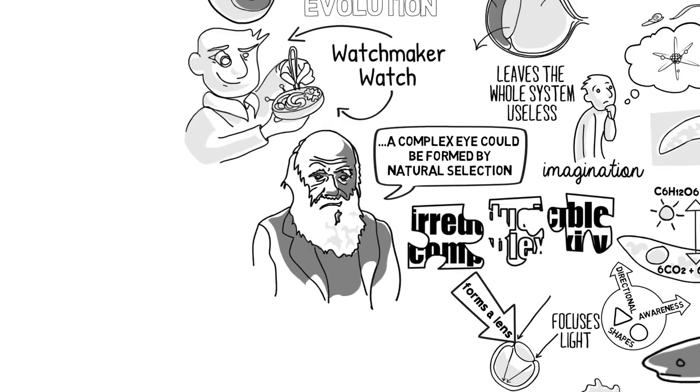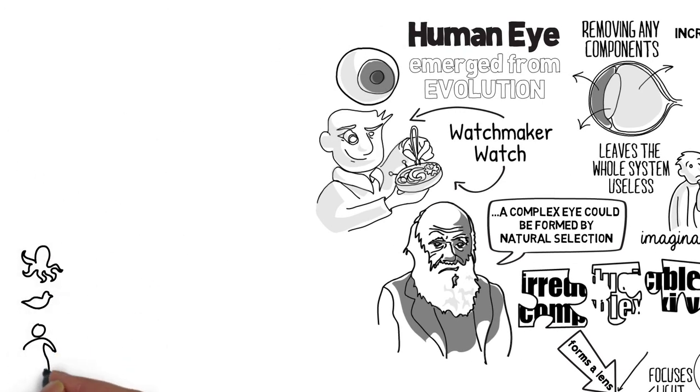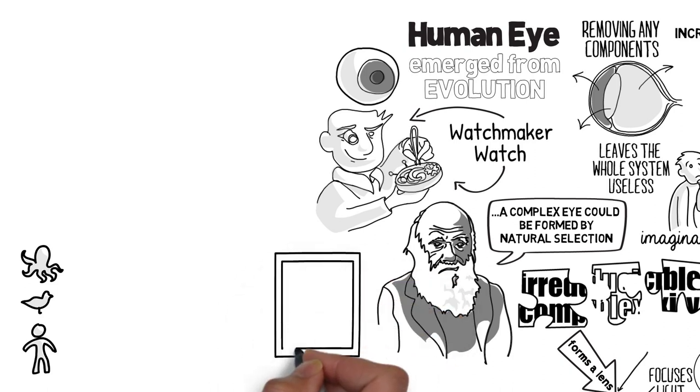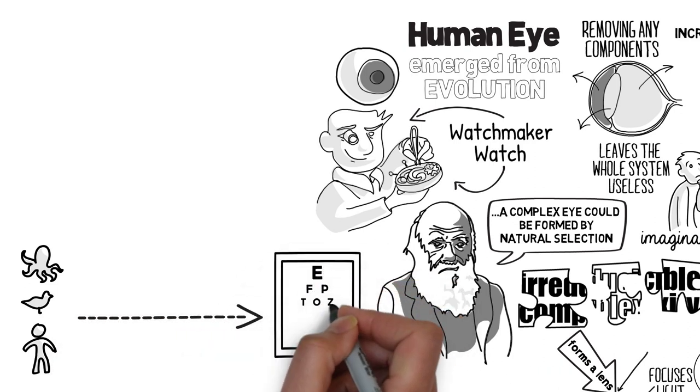And all sorts of animals including sea creatures, birds and human beings have eyes with clear vision that can see over a long distance.